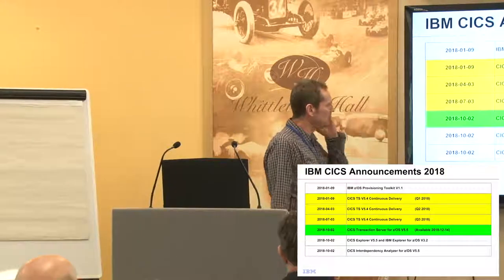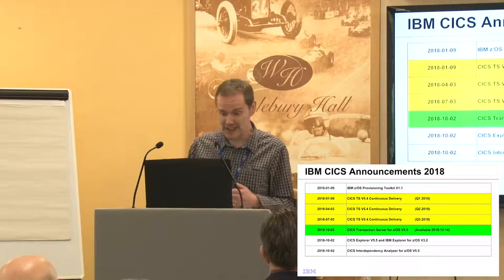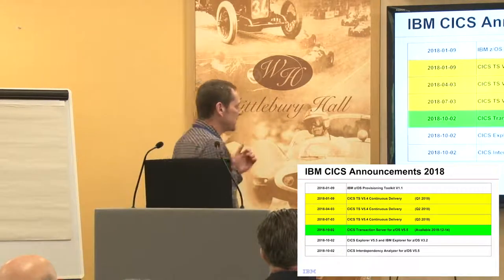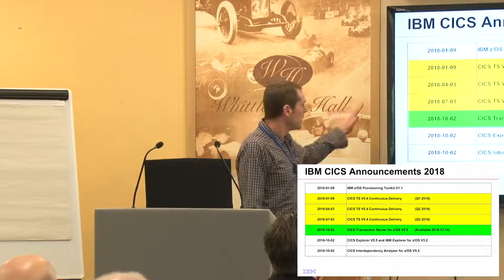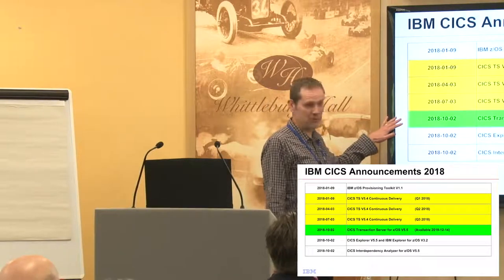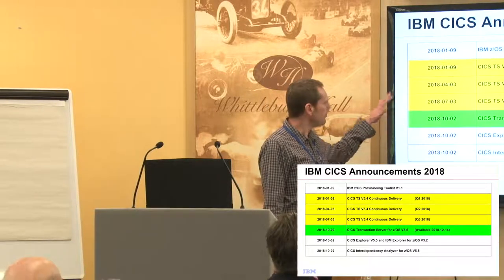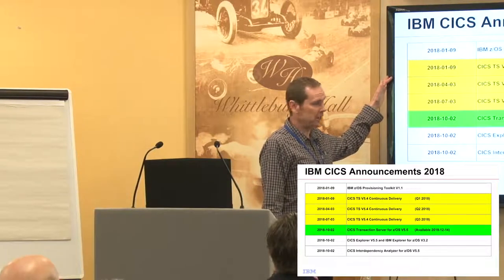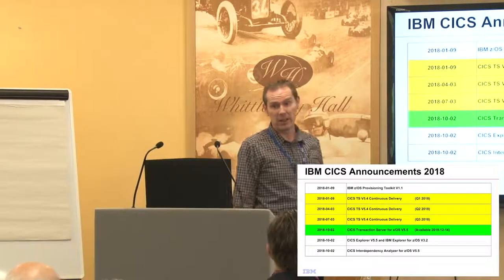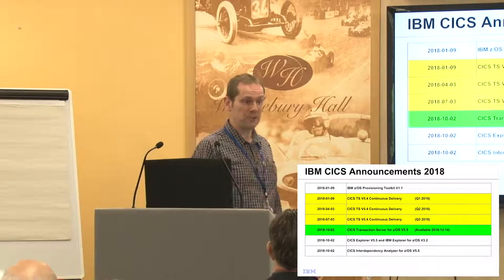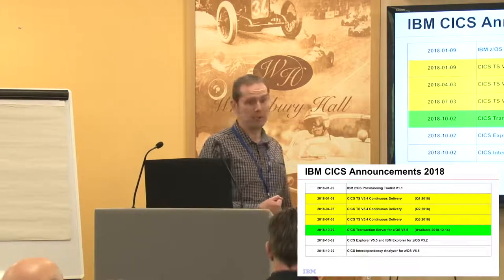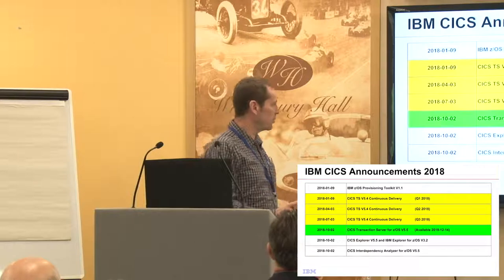This is a brief summary of what we have announced this year — the CICS-related announcements. It illustrates what we've been doing for a few releases now with continuous delivery. 5.5 was announced in October, but every three months we've been announcing continuous delivery content primarily for 5.4. So every 90 days, a lot of content which in the past would only have been made available in the next release has been made available in current releases.